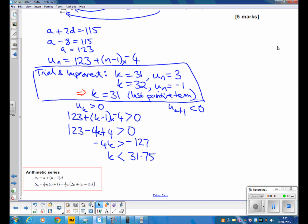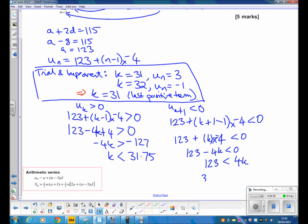We also need to check what the other inequality gives us. uk+1 is less than 0, so 123 plus k+1 minus 1 times negative 4 is less than 0. So 123 minus 4k is less than 0. 123 is less than 4k. So 123 divided by 4 is 30.75. No negative here, so the sign stays. k is greater than 30.75.